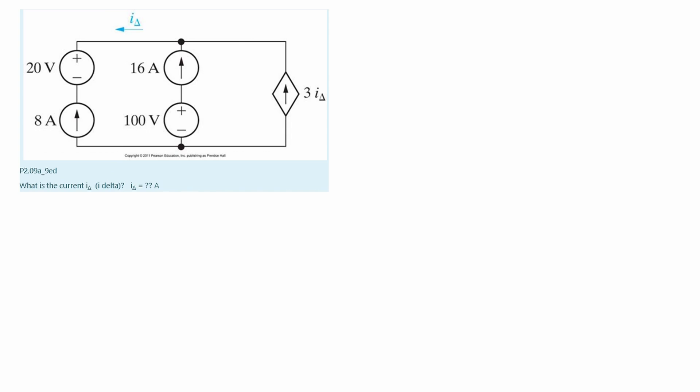To solve this we are going to use this point right here which is known as a node. When we're looking at nodes, whatever goes into our node is known as a positive current and if it's going out it's a negative current. So if we are going into our node that means it is a negative and if we are going out it is a positive.